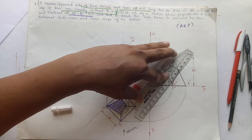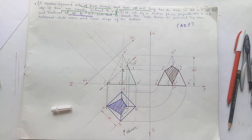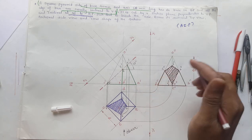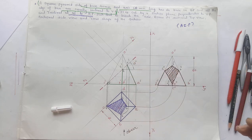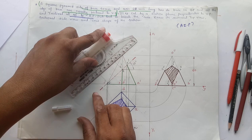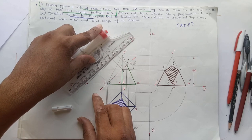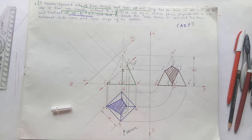Draw the hatching lines inclined at an angle of 45 degrees to the XY line. This will be the section in the side view. Now we have to draw the true shape of the section. To draw the true shape, first draw a reference line parallel to the cutting plane line, because the true shape of the section will be in a plane parallel to the cutting plane.